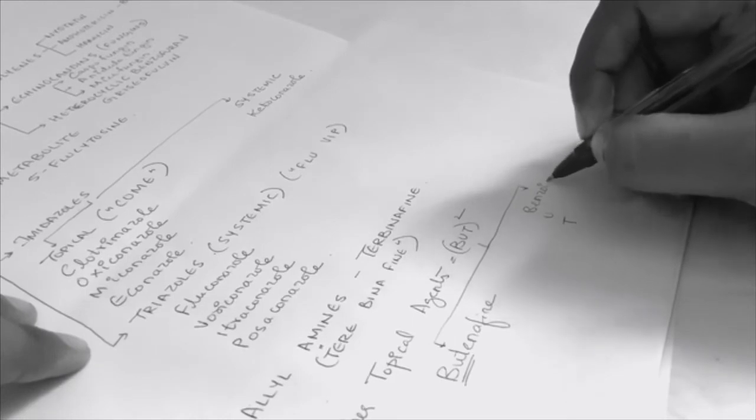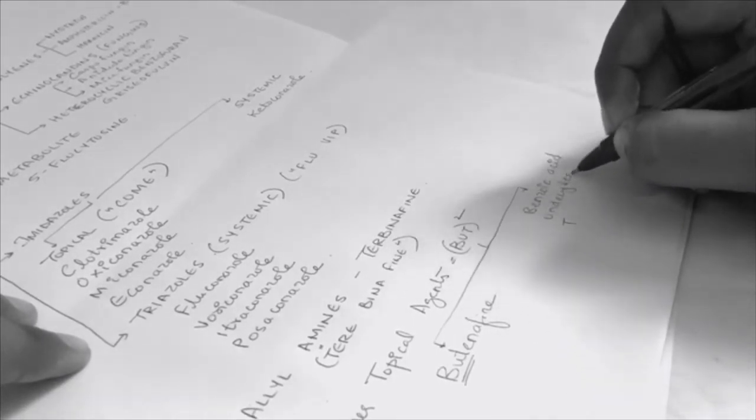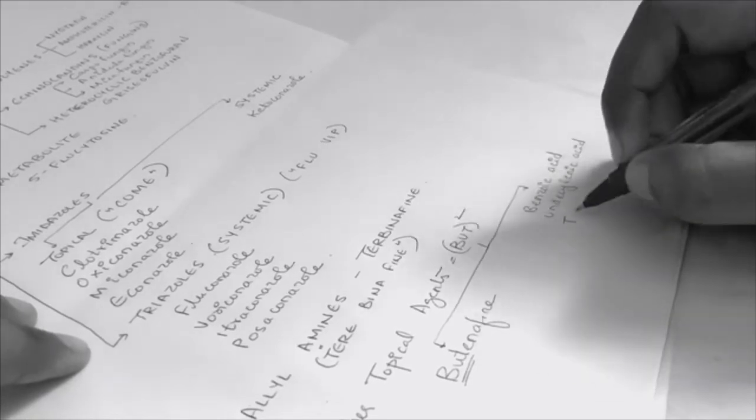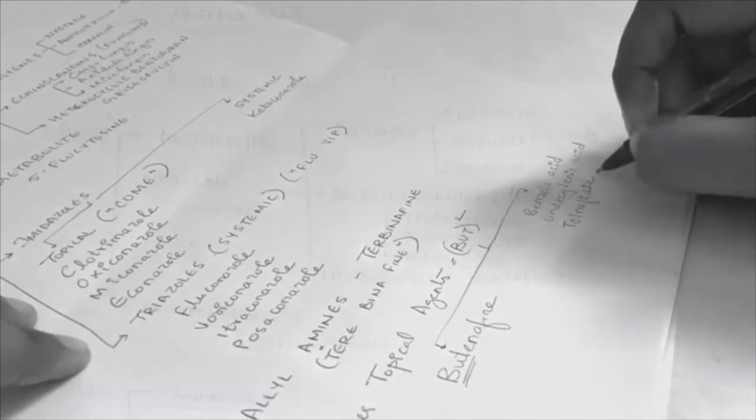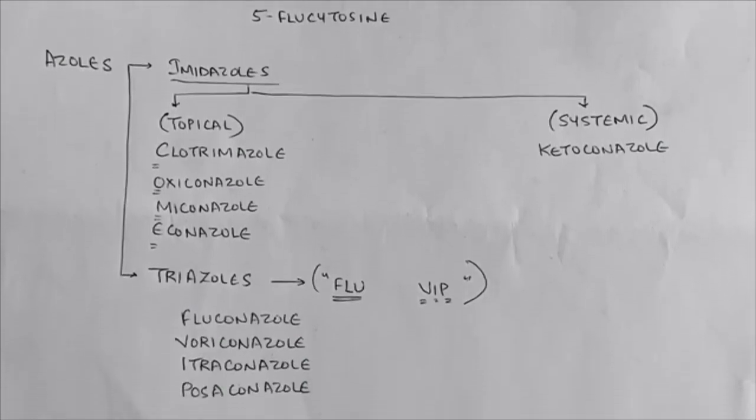B is for benzoic acid, U is for undecylenic acid, and T is for tolnaftate. I hope this video was helpful. Thank you.